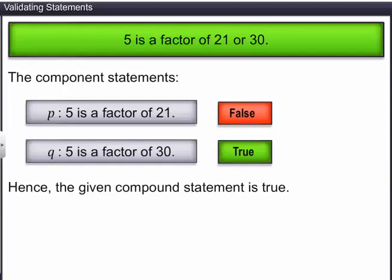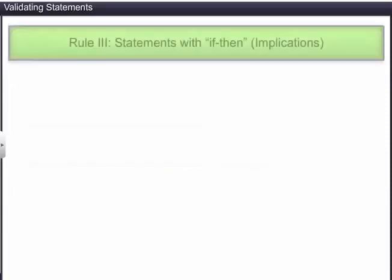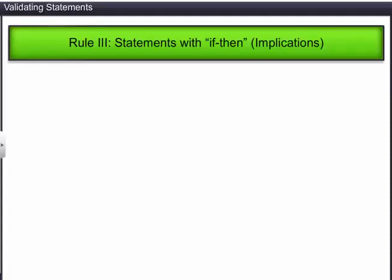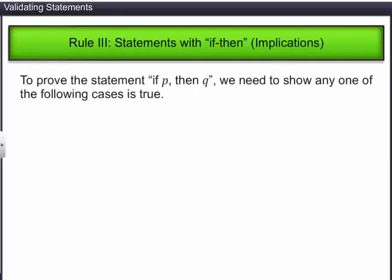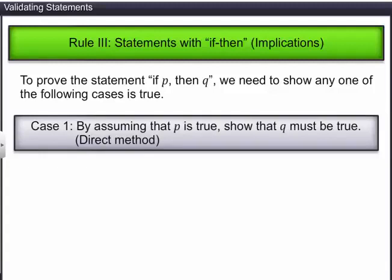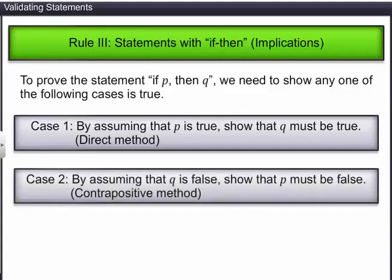Rule 3 is used to validate statements with 'if-then', or implications. To prove the statement 'if P then Q', we need to show any one of the following cases is true. First, by assuming that P is true, show that Q must be true — this is called the direct method. Second, by assuming that Q is false, show that P must be false — this is called the contrapositive method.